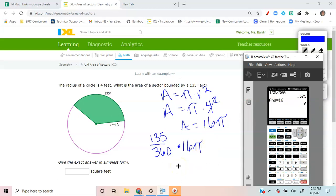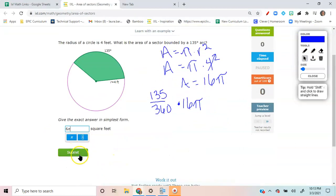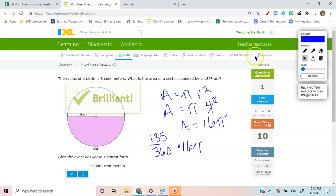My answer is going to be 6 pi. Let's go ahead and enter that into our IXL. 6 pi, keeping it in terms of pi. My answer is correct.